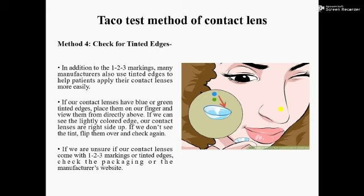Number four: check for tinted edge. In addition to the one, two, three markings, many manufacturers also use a tinted edge to help patients apply their contact lenses more easily. If our contact lenses have a blue or green tinted edge, place them on our finger and view them from directly above. If we can see the lightly colored edge, our contact lenses are right side up. If we don't see the tint, flip them over and check again.